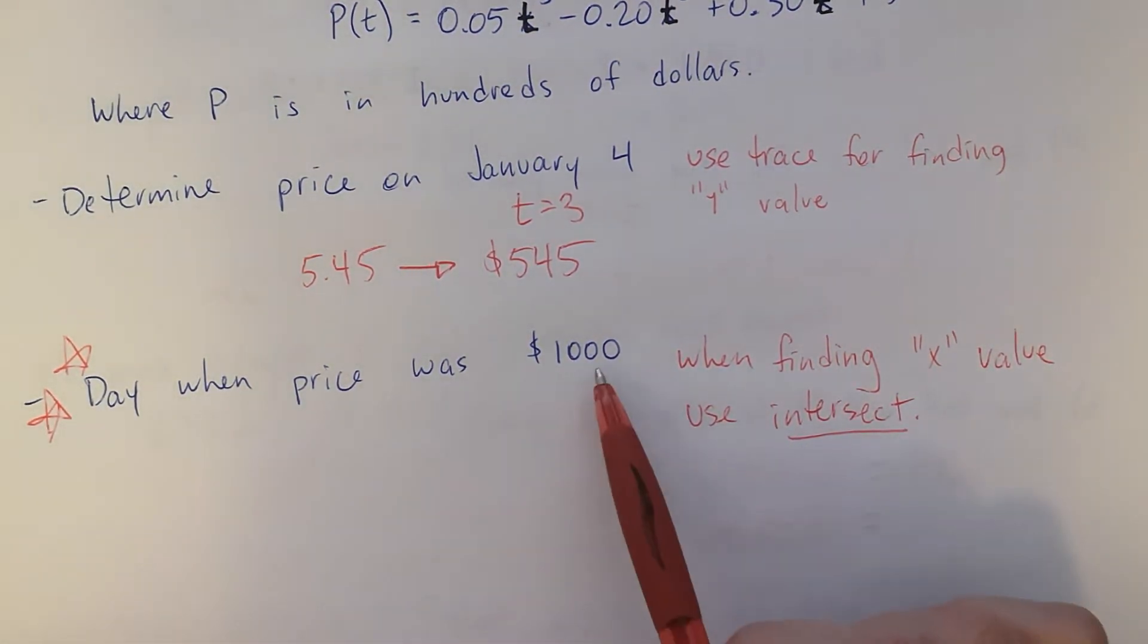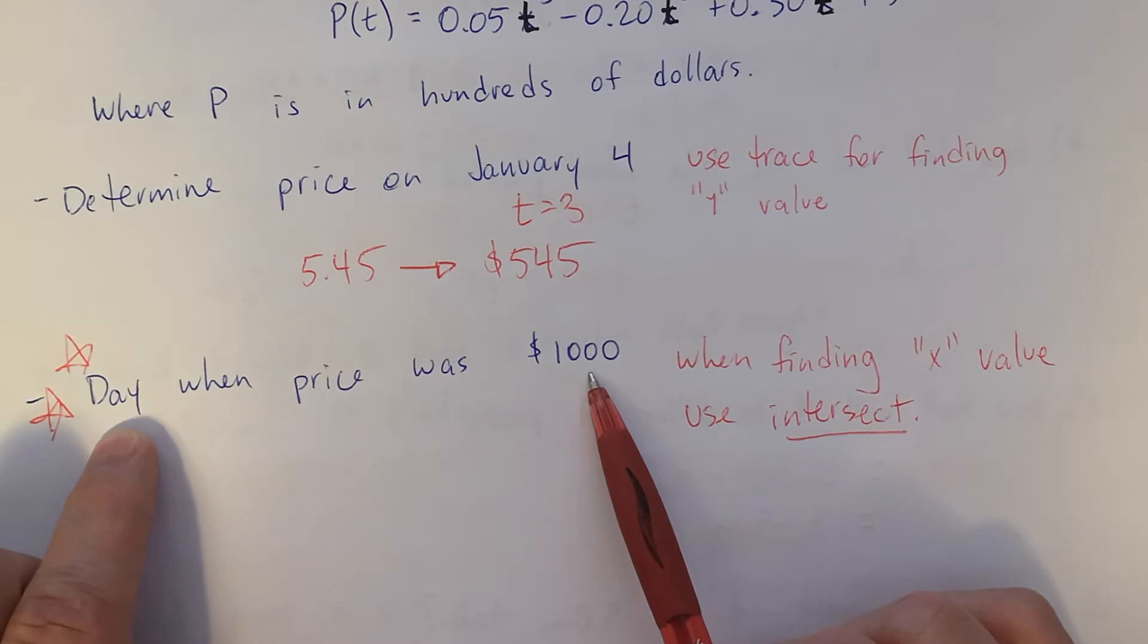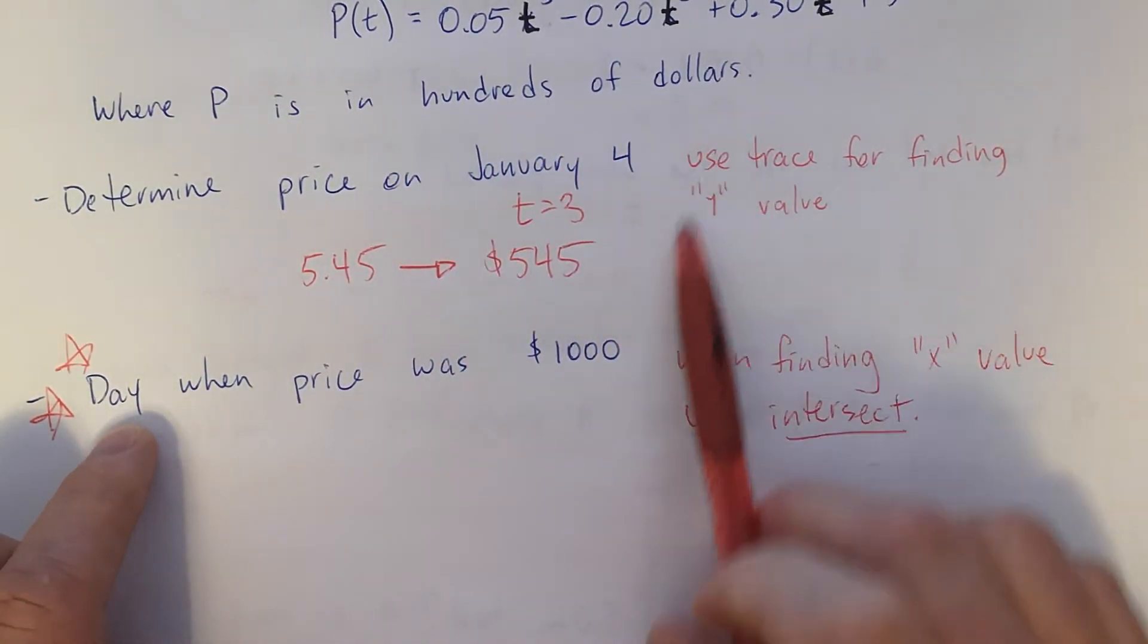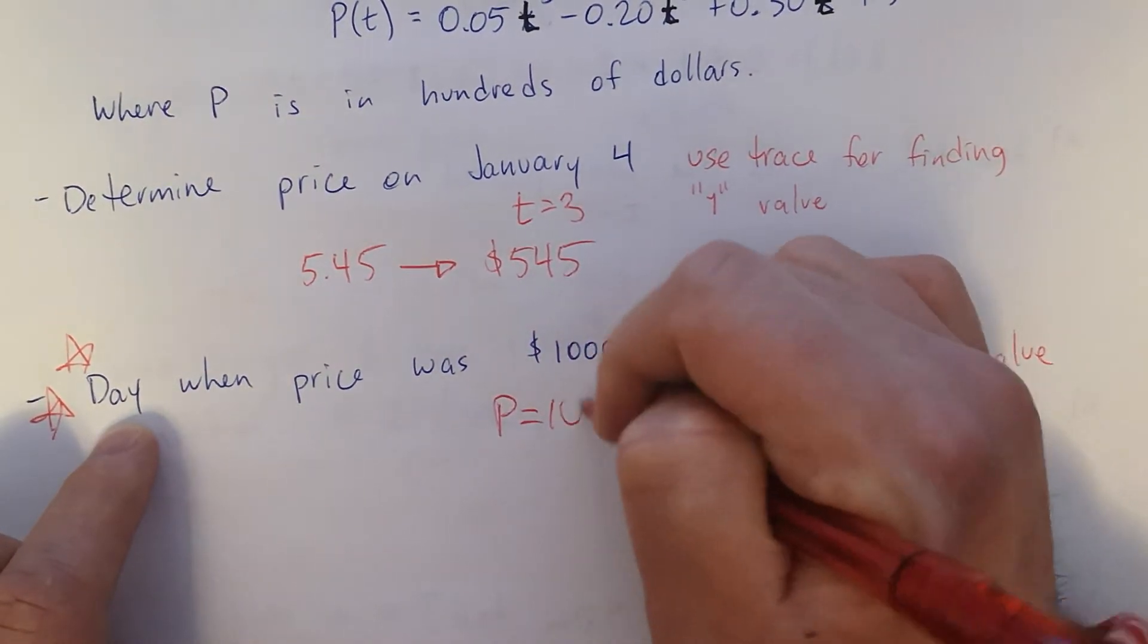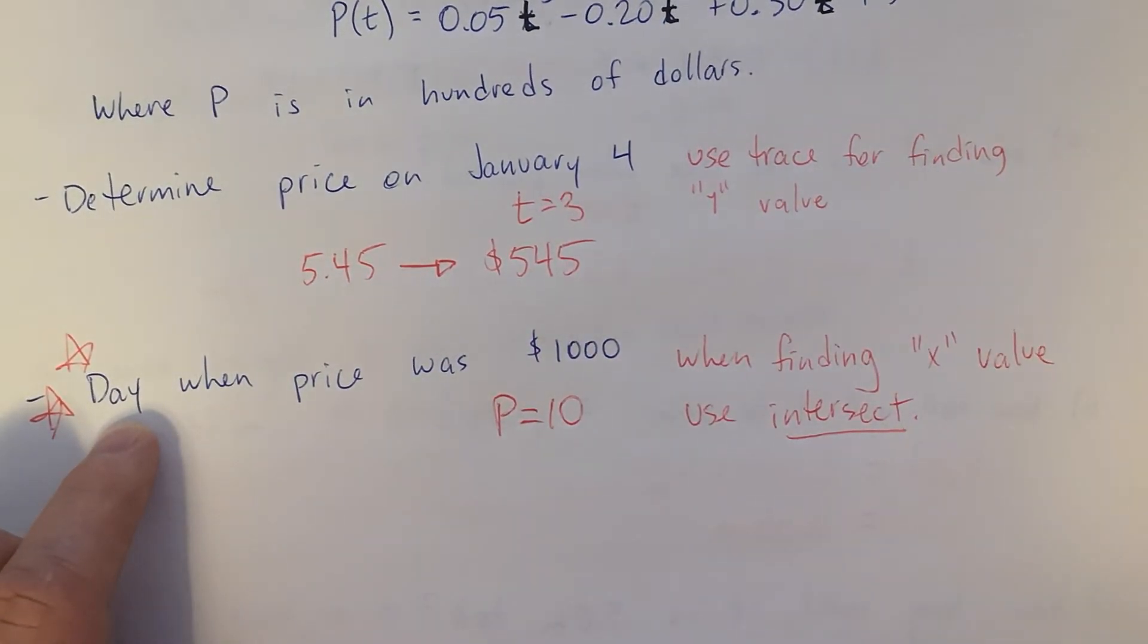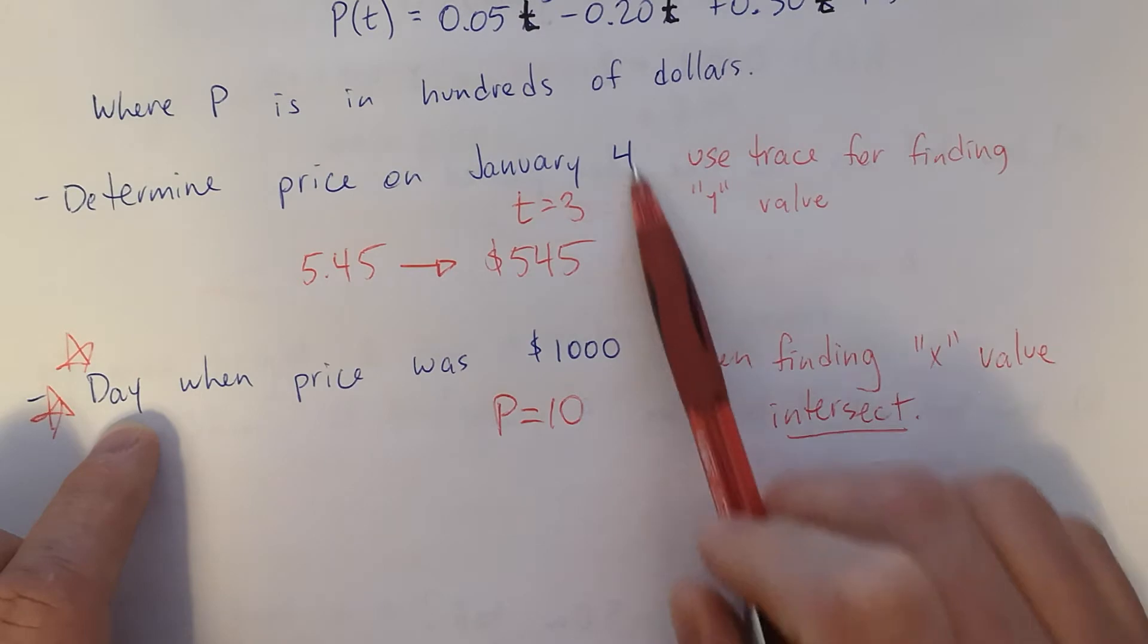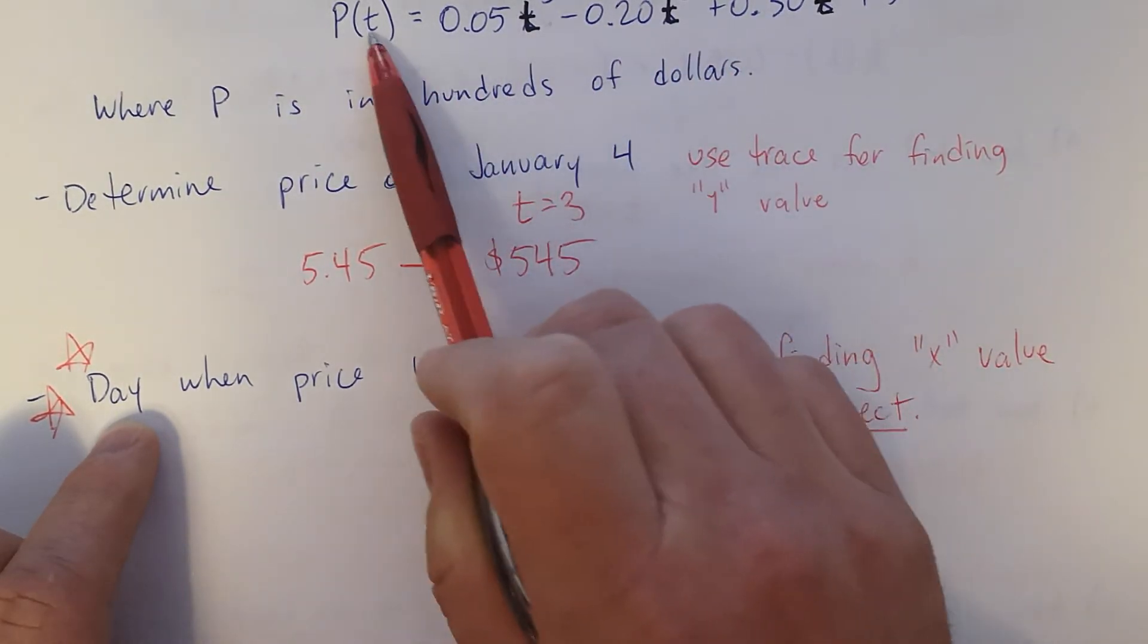Now, a thousand dollars, that's an X value. Or sorry, that's a Y value, but we're finding the day, which is an X value. What I want to point out, though, is P's in hundreds of dollars. You have to divide this by hundred. This is saying that P equals 10. You guys agree with that? So ten hundred is a thousand. So we're finding the value of T or X when P equals 10.